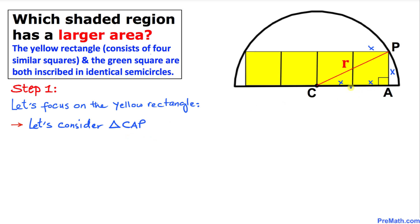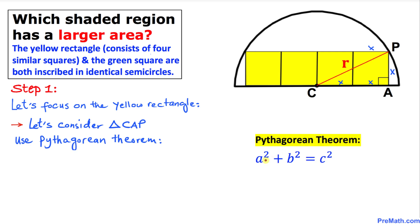Now let's consider triangle CAP. We know this is a right triangle, so we are going to use the Pythagorean theorem: a² + b² = c². For this right triangle CAP, the hypotenuse c equals r. Side a is going to be x + x, which becomes 2x, and side b is x.